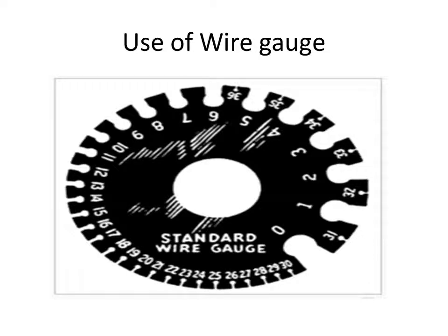Note the number of the notch into which the wire fits easily. From that number, you can read the wire's size in mm or inches from the table provided with the standard wire gauge.